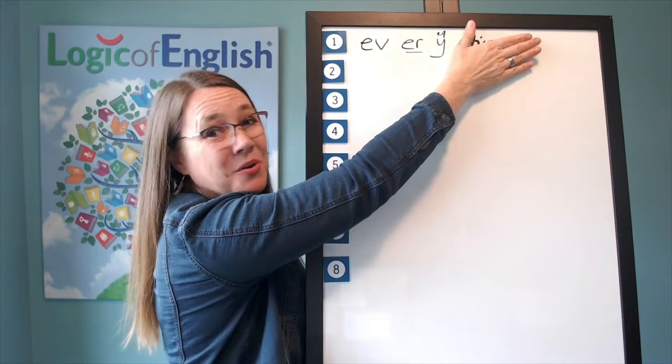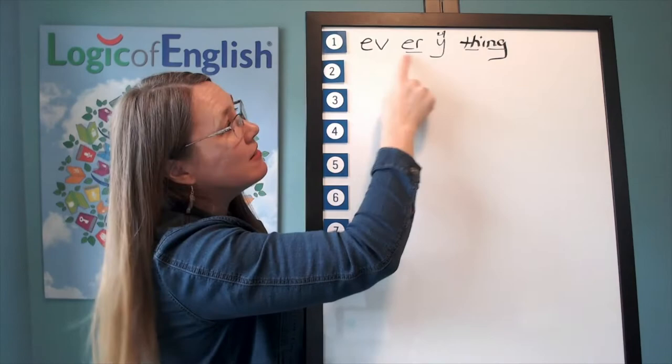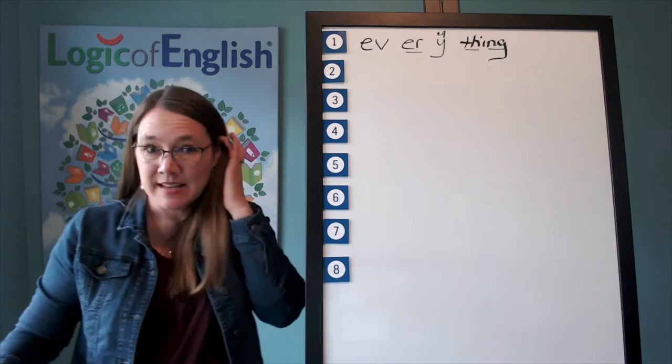So every is a word and there y is saying its e sound at the end of a multi-syllable word. Let's read it. Ev, er, e, th, i, n. Everything. Outstanding.